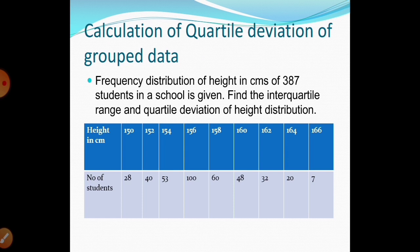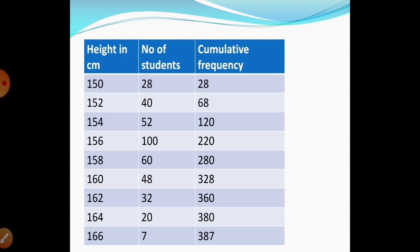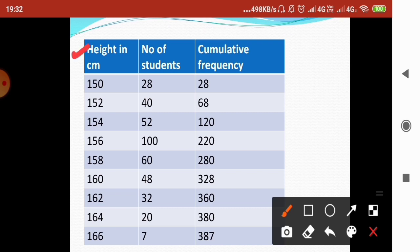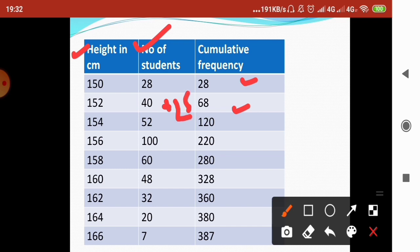The heights in centimeters are: 150, 152, 154, 156, 158, 160, 162, 164, and 166, with the number of students in each category given. I have plotted this in a table with columns for height, number of students, and cumulative frequency. The cumulative frequencies are calculated by adding successively: 28, then 28+40=68, then 68+52=120, and so on. The total n is 387.